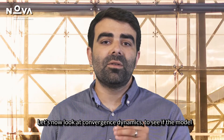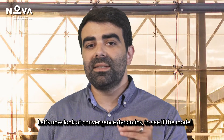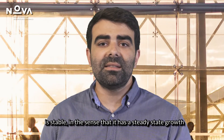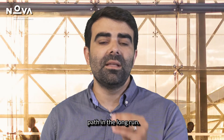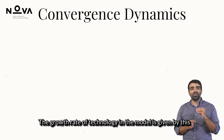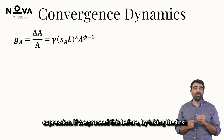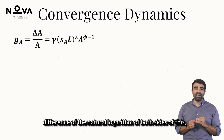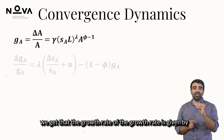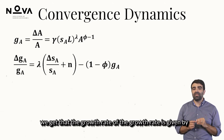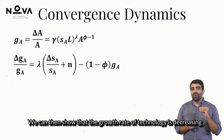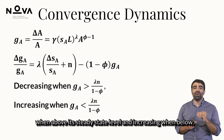Let's now look at convergence dynamics to see if the model is stable, in the sense that it has a steady state growth path in the long run. The growth rate of technology in the model is given by this expression. If we proceed by taking the first difference of the natural logarithm of both sides, we get that the growth rate of the growth rate is given by this expression. We can then show that the growth rate of technology is decreasing when above its steady state level, and increasing when below.